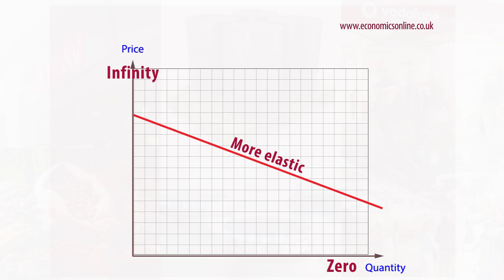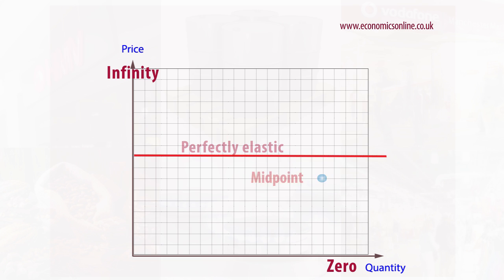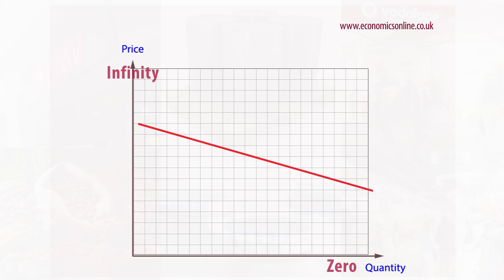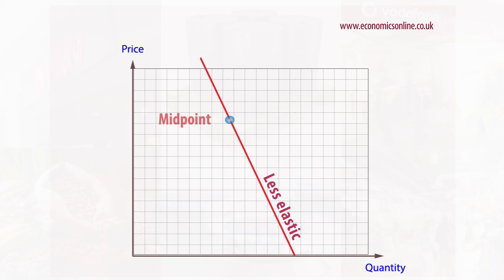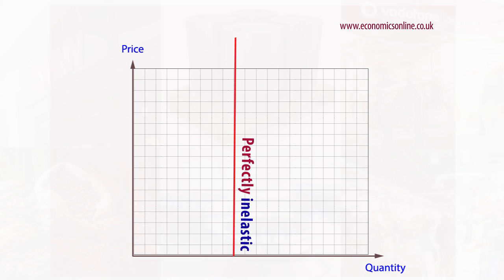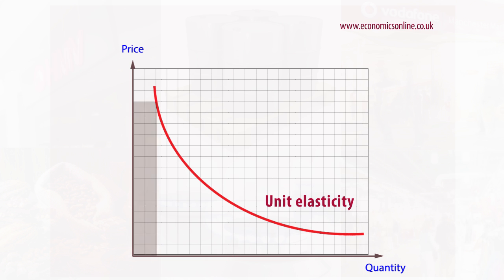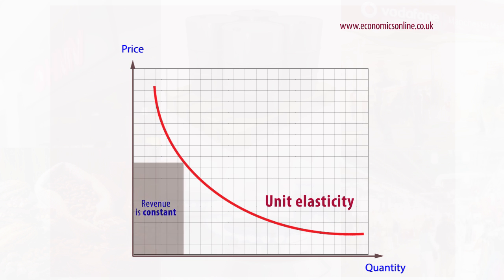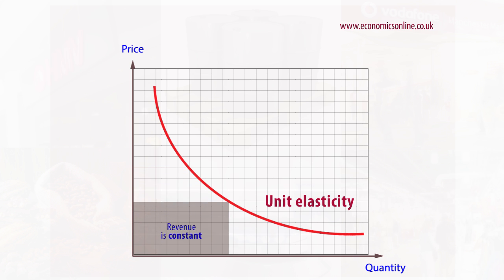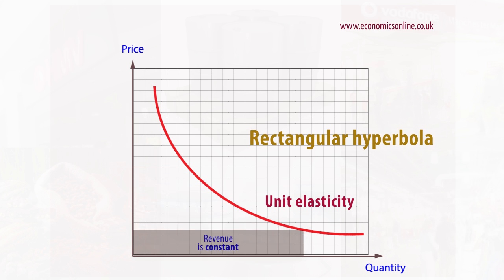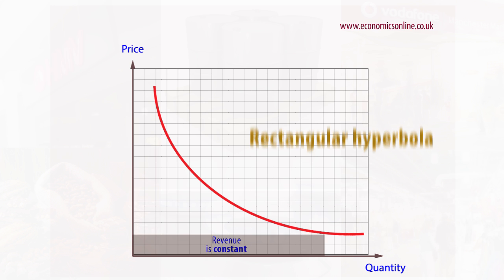A perfectly elastic demand curve over its length is horizontal. A perfectly inelastic one is vertical. A unitary elastic curve, where all price and quantity combinations yield identical revenue, is called a rectangular hyperbola.